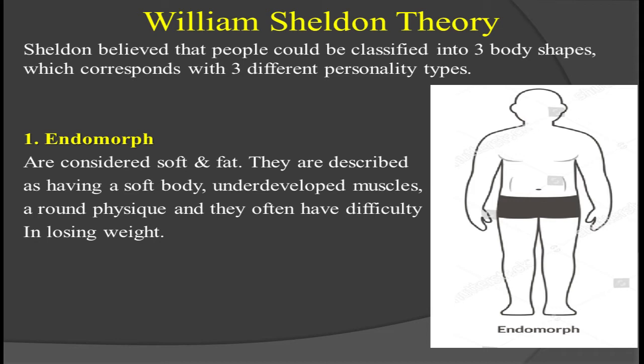So according to William Sheldon, the endomorph is a physical structure that is very soft and fat. These are fat people whose body is very soft and whose muscles are underdeveloped. The picture of endomorph people is in front of you.